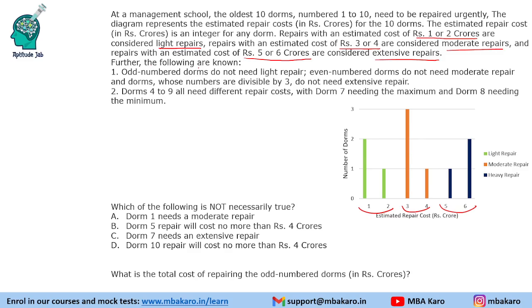Some more information is given: odd-numbered DOMs do not need light repair, even-numbered DOMs do not need moderate repair, and DOMs whose numbers are divisible by 3 do not need extensive repair. Using these conditions we will find the repair cost needed by each DOM.